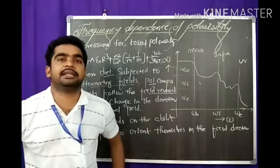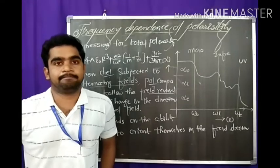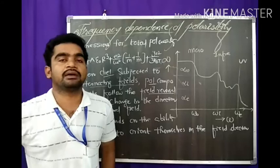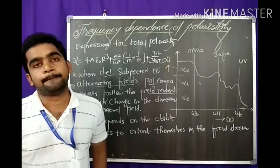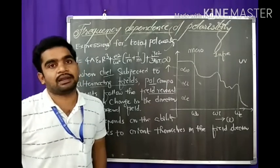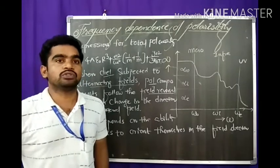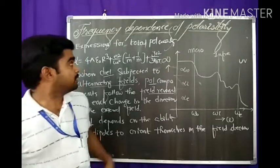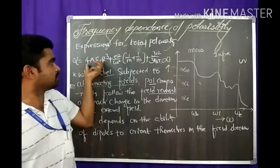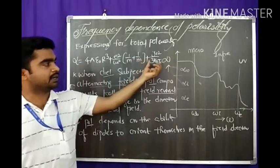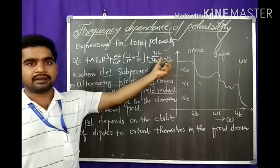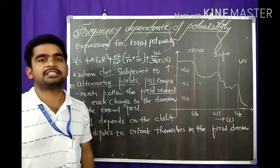Next, frequency depends on polarizability. How frequency depends on different types of polarizations: electronic, ionic, orientational, and space charge polarizations. The total polarization expression is alpha equal to the sum of electronic polarization, ionic polarization, and dipolar or orientational polarization. Space charge polarization is also present but often neglected.